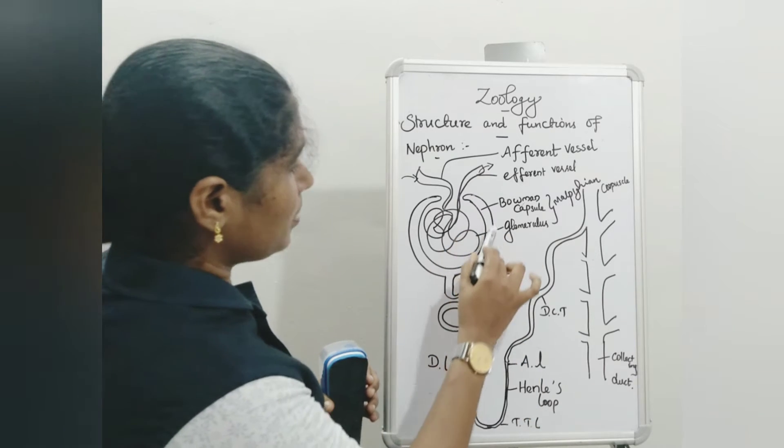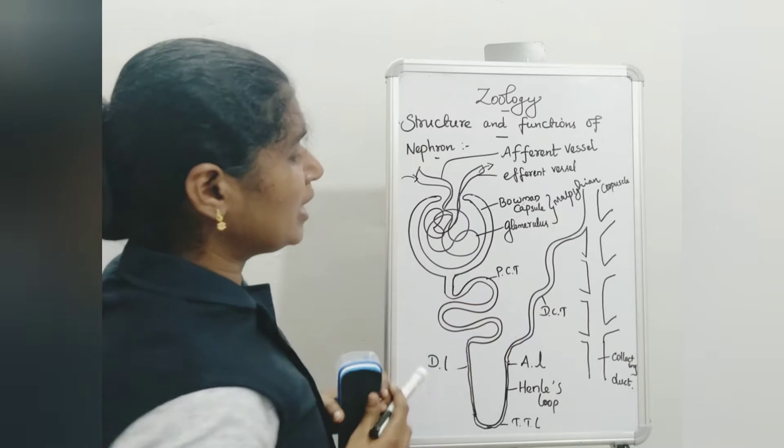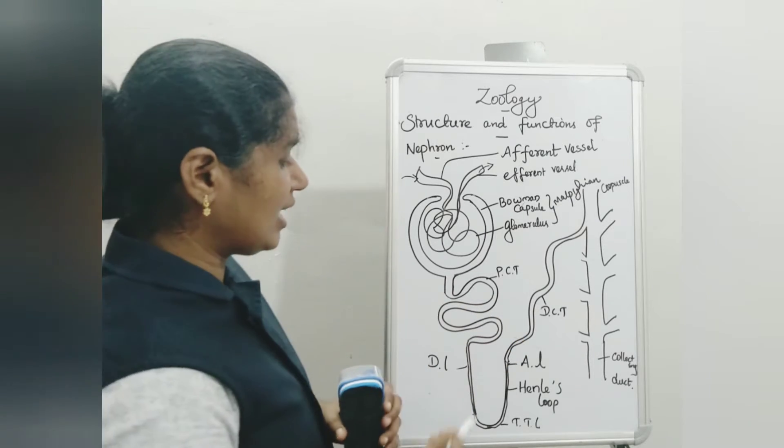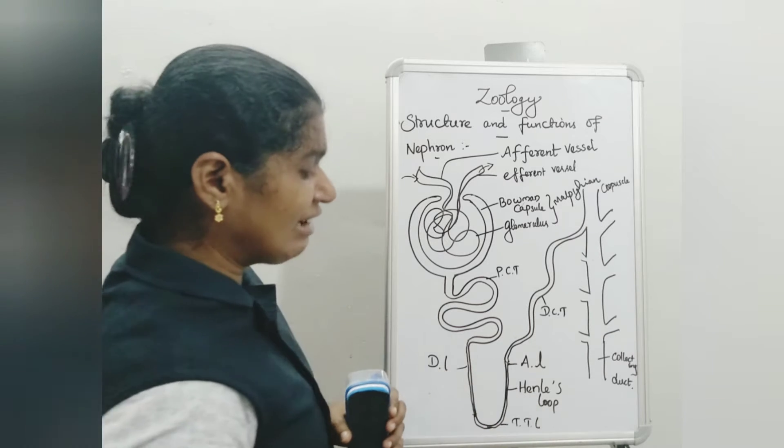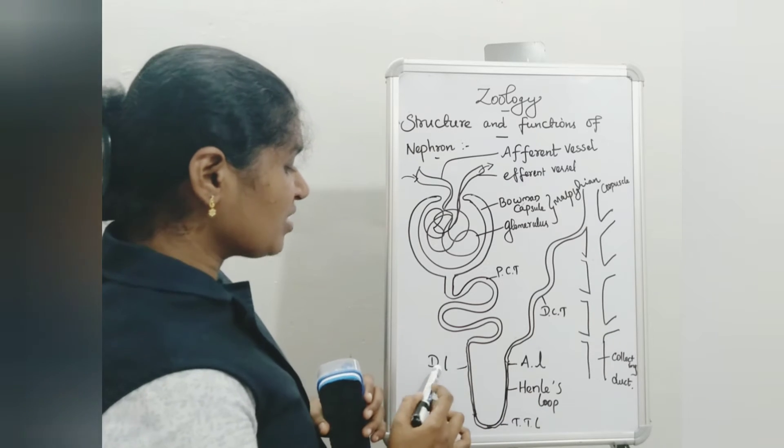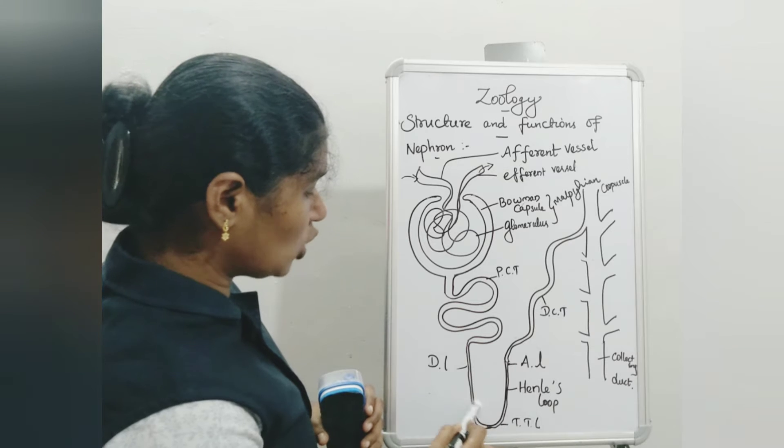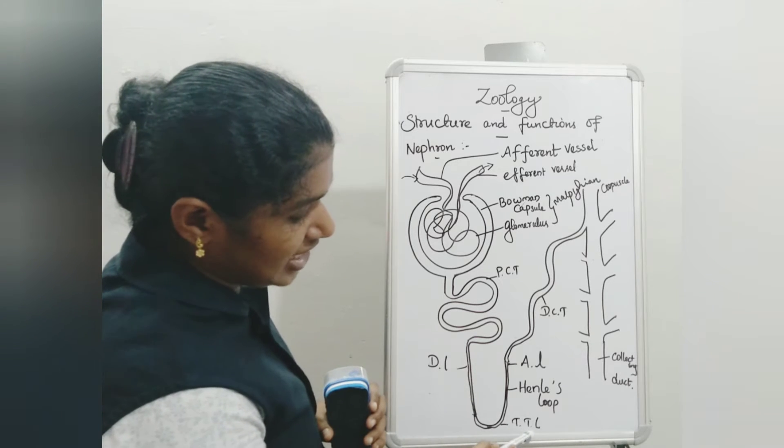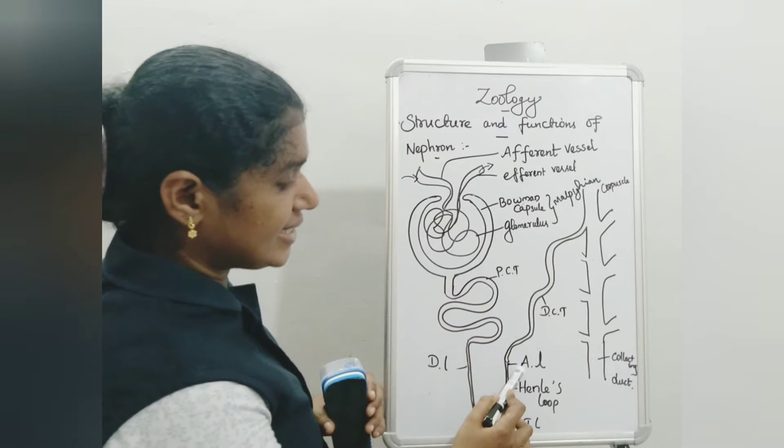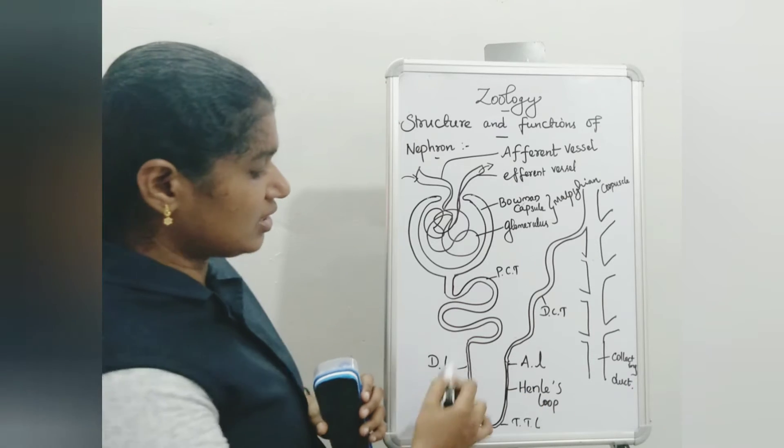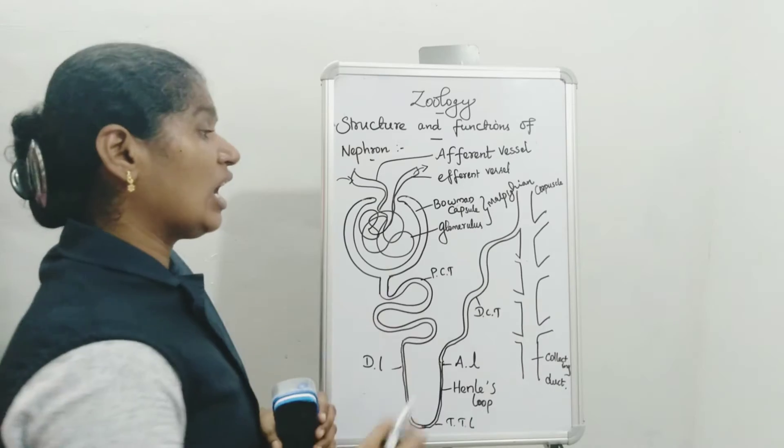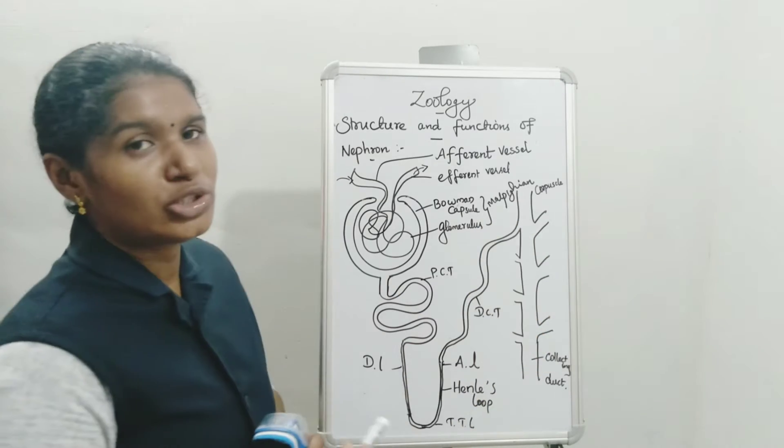Then after, the Bowman's capsule opens into proximal convoluted tubule. Then after, it opens into Henle's loop. The first loop we call descending limb, the second is ascending limb. These three we can join and call as Henle's loop. Then distal convoluted tubule.